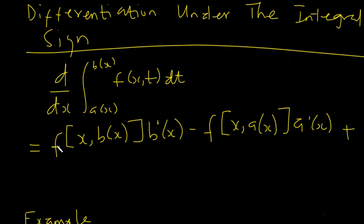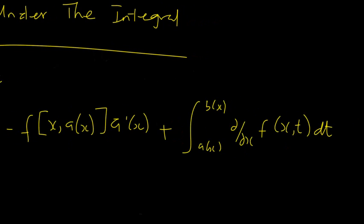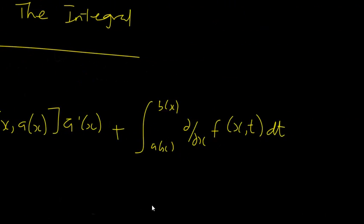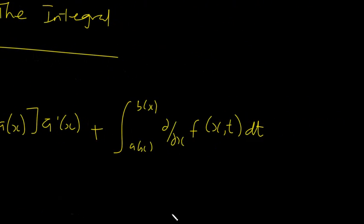You pick the functional value at X and the upper limit — since T is changing, T becomes the upper limit. So you get F(X, upper limit) multiplied by the derivative of the upper limit, minus F(X, lower limit) multiplied by the derivative of the lower limit, plus the partial derivative with respect to X pushed inside the integral sign.